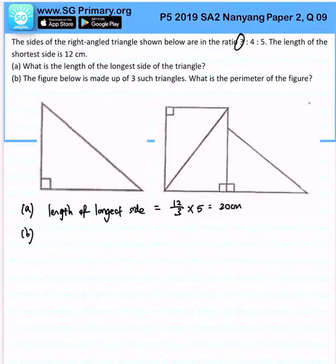Now part B. The figure below is made of 3 such triangles. What is the perimeter of the figure? First, let's find the length of the second longest side: 12 divided by 3 times 4, that's 16 cm.